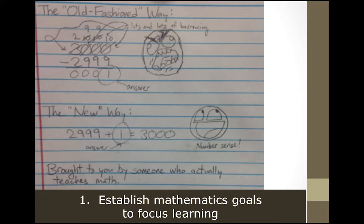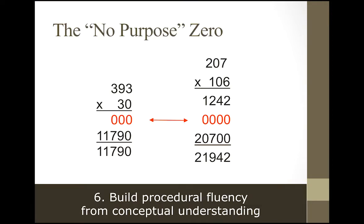Some of you may have seen this one. It was floating around on Facebook for quite a while, where the problem is 3,000 minus 2,999. Now, I actually like the first one because that student actually took the zero in the ones place and made it a 10 when they did all the regrouping. However, if you look at the new way, when a student understands that 2,999 plus what number gives them 3,000, it's a whole lot easier.